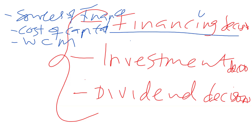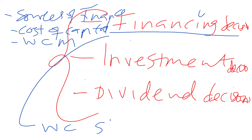After sources of finance, we learn cost of capital and working capital management. Under cost of capital, we study the capital structure. The capital of any business is mainly made up of two major components: equity and debt. These are the two sides of capital structure that we analyze.